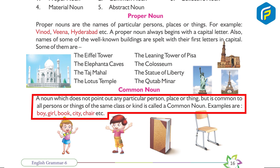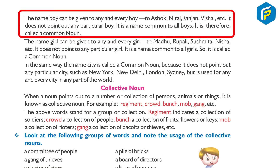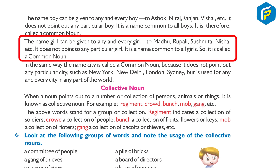Common noun: a noun which does not point out any particular person, place or thing but is common to all persons or things of the same class or kind is called a common noun. Examples: boy, girl, book, city, chair, etc. The name 'boy' can be given to any and every boy — to Ashok, Neeraj, Ranjan, Vishal, etc. It does not point out any particular boy; it is a name common to all boys. Similarly, the name 'girl' can be given to any and every girl — to Madhu, Rupali, Sushmita, Nisha, etc.